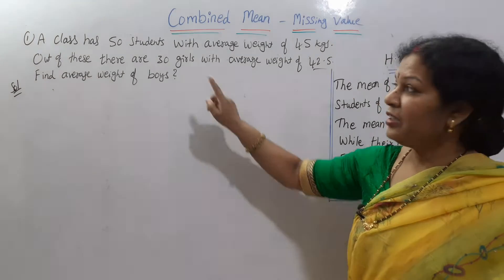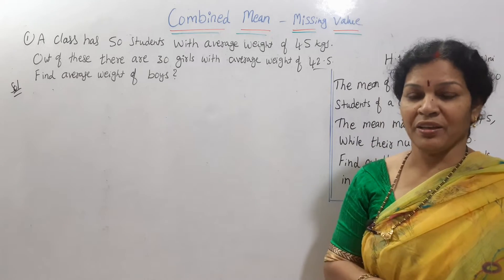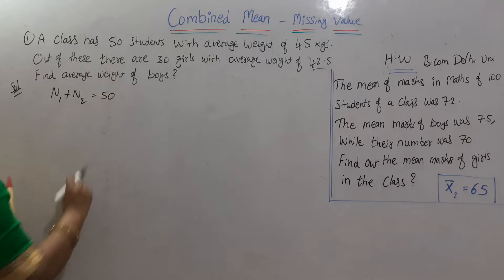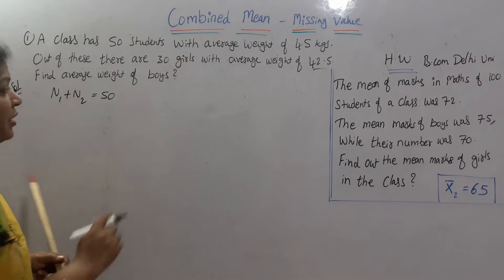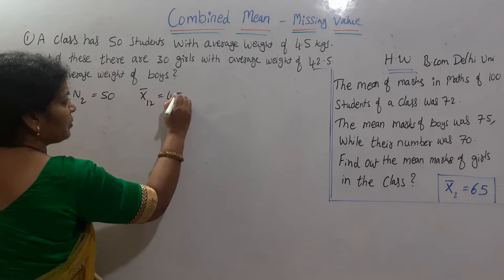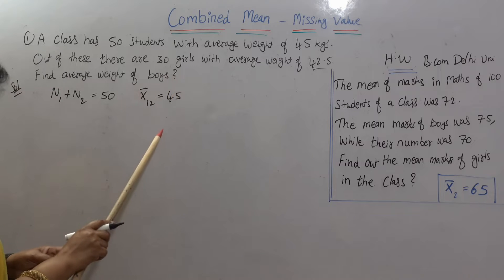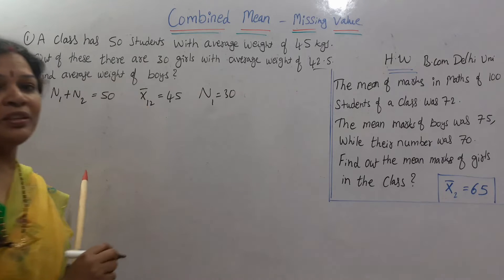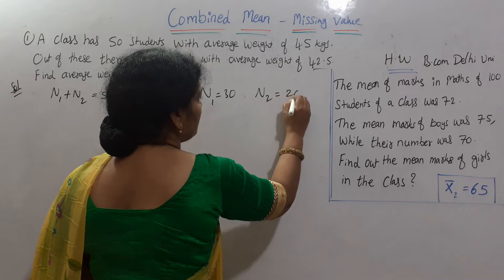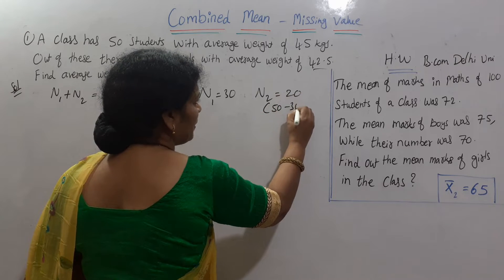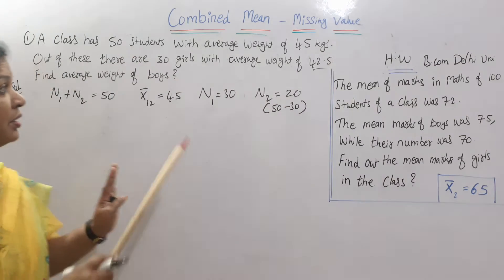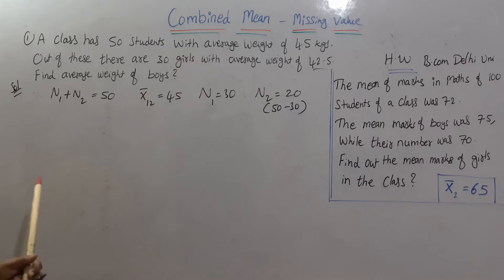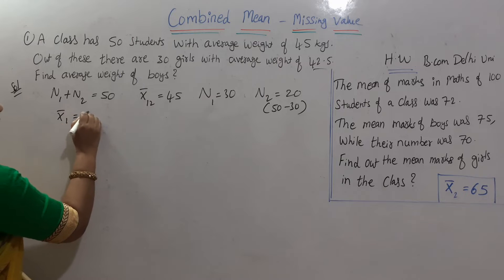What is our data? Total students n1 plus n2 equals 50. Boys are n2, which means 20. Out of these, there are 30 girls with an average weight of 42.5, so x̄₁ equals 42.5.